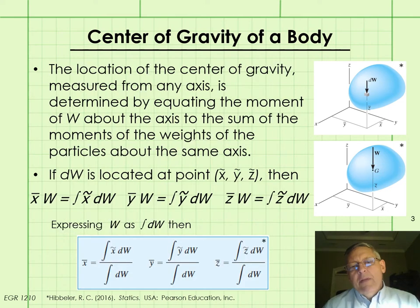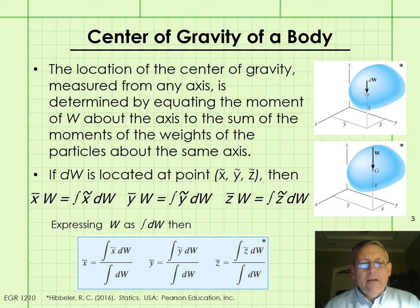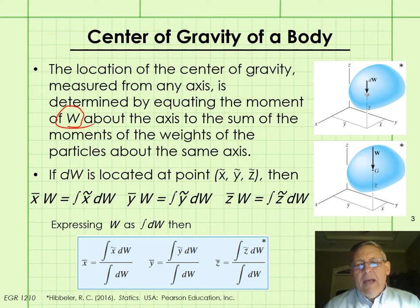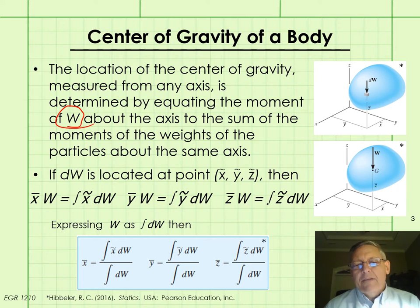We can determine the location of the center of gravity of a body measured from any axis — in our case the X, Y, or Z axis — by equating the moment of the weight of the body W about the axis to the sum of the moments of the weights of the individual particles about the same axis.